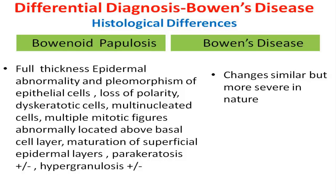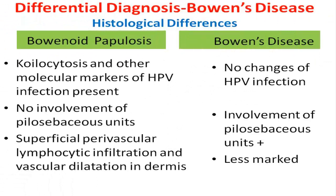Parakeratosis and hypergranulosis may be seen in bowenoid papulosis. While bowenoid papulosis may show presence of koilocytic change and other HPV markers, Bowen's disease is not associated with such changes. Bowen's disease is usually associated with involvement of pilosebaceous units, while bowenoid papulosis is not. Superficial perivascular lymphocytic infiltration and vascular dilatation in the dermis is more marked in bowenoid papulosis as compared to Bowen's disease.